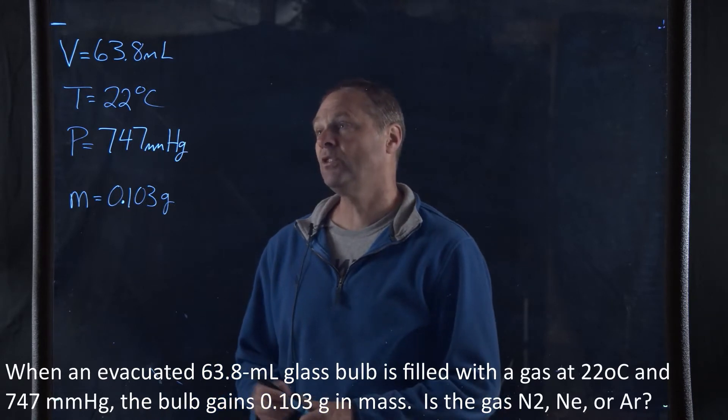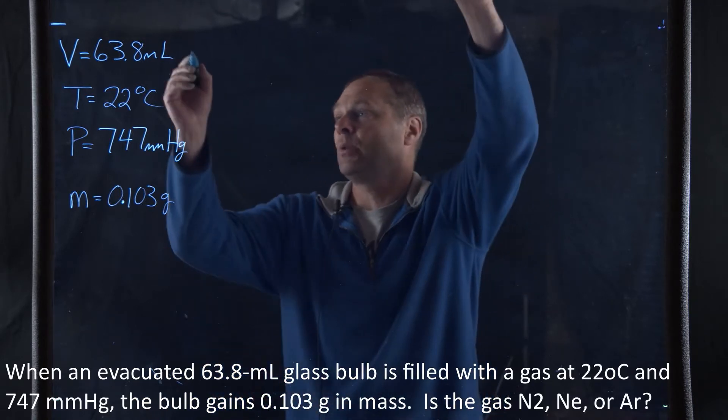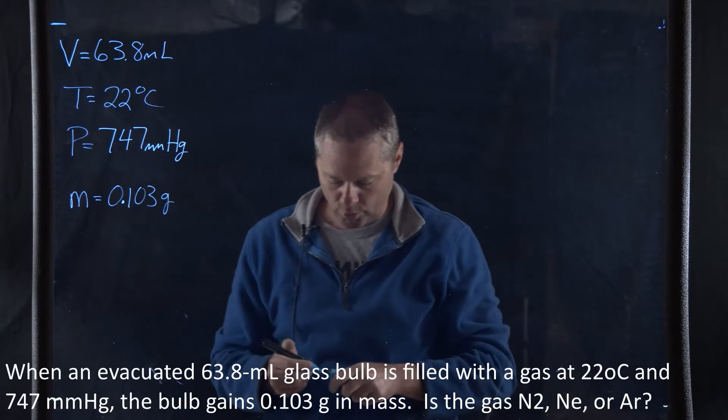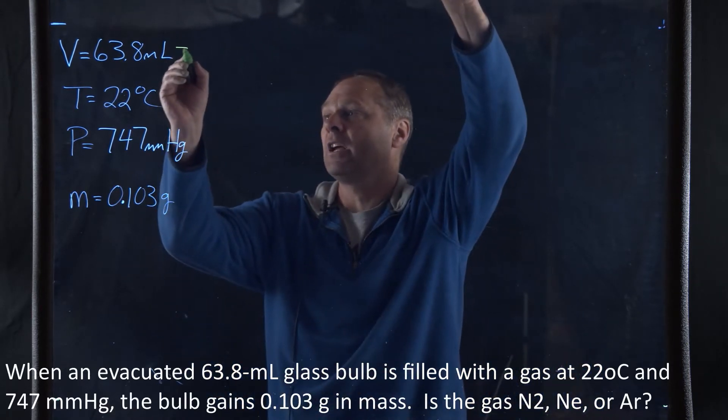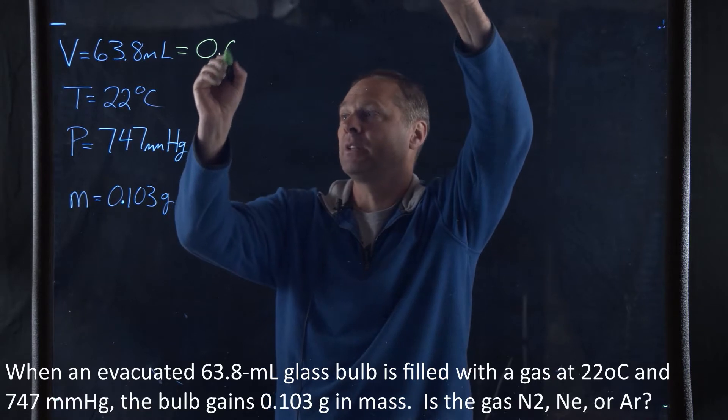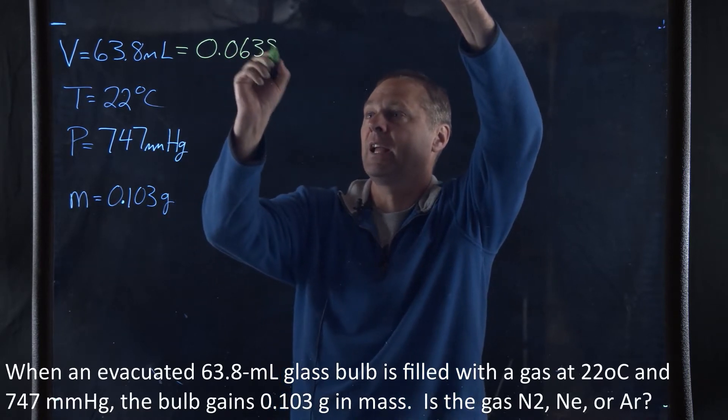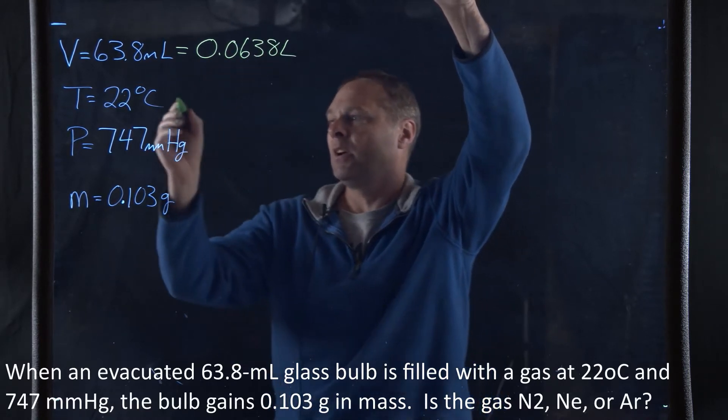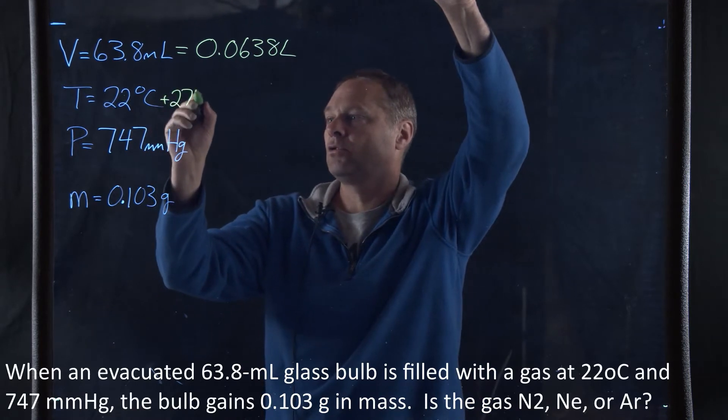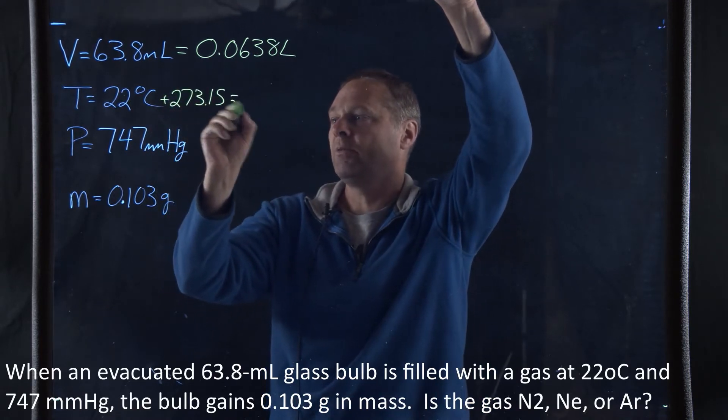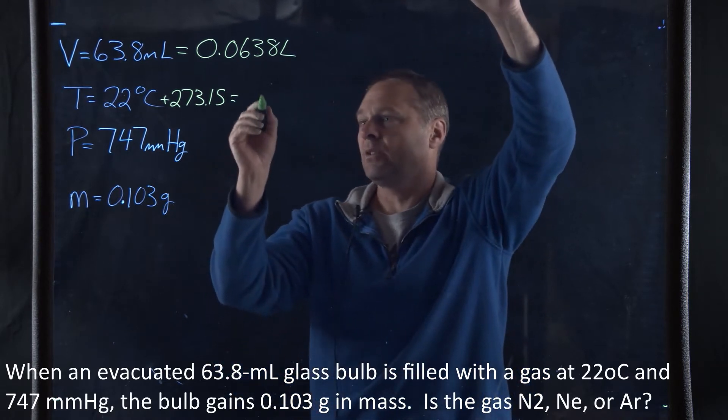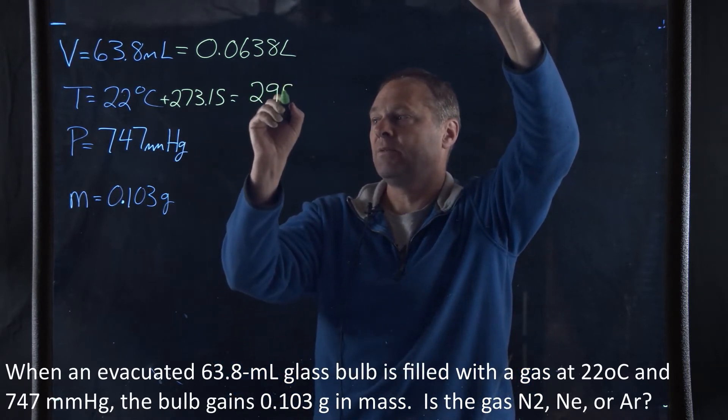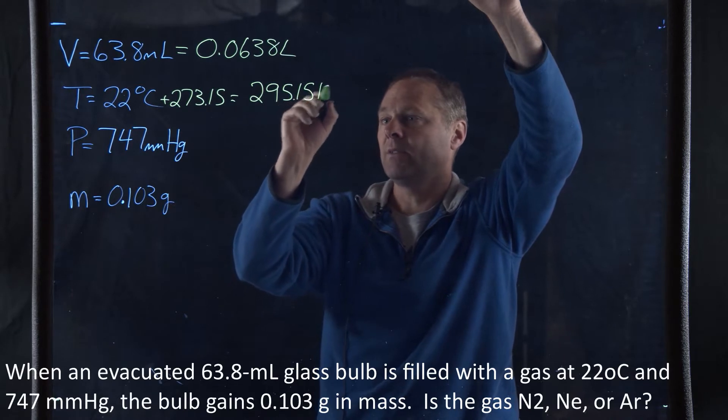Before we start, we need to do some conversions here. We have to convert this into liters, and this will become 0.0638 liters. We add 273.15, and that's going to get us into Kelvins, so that is 295.15 Kelvin.